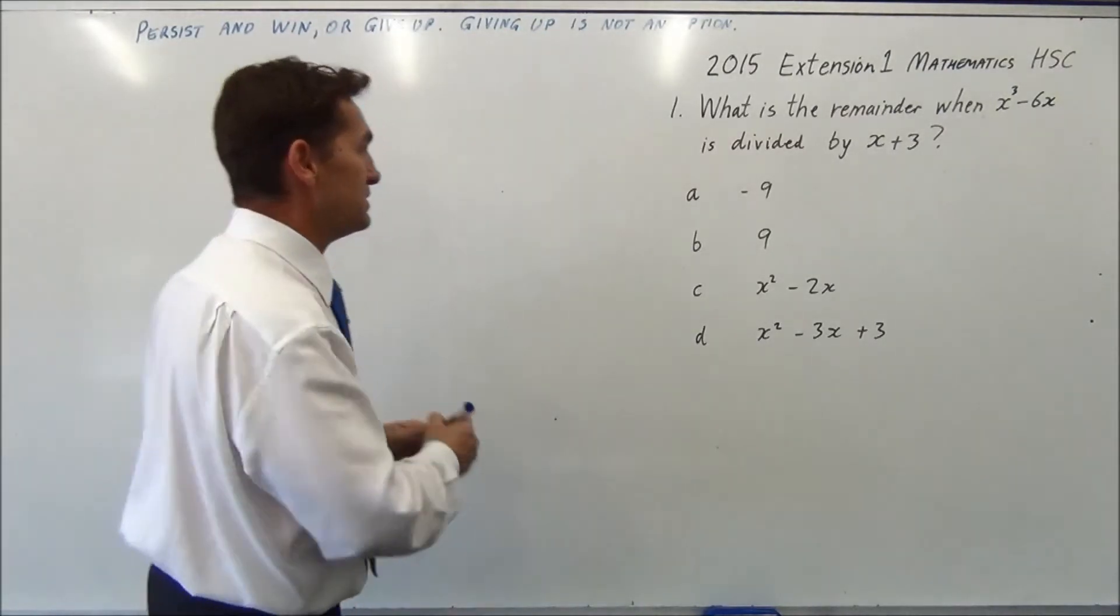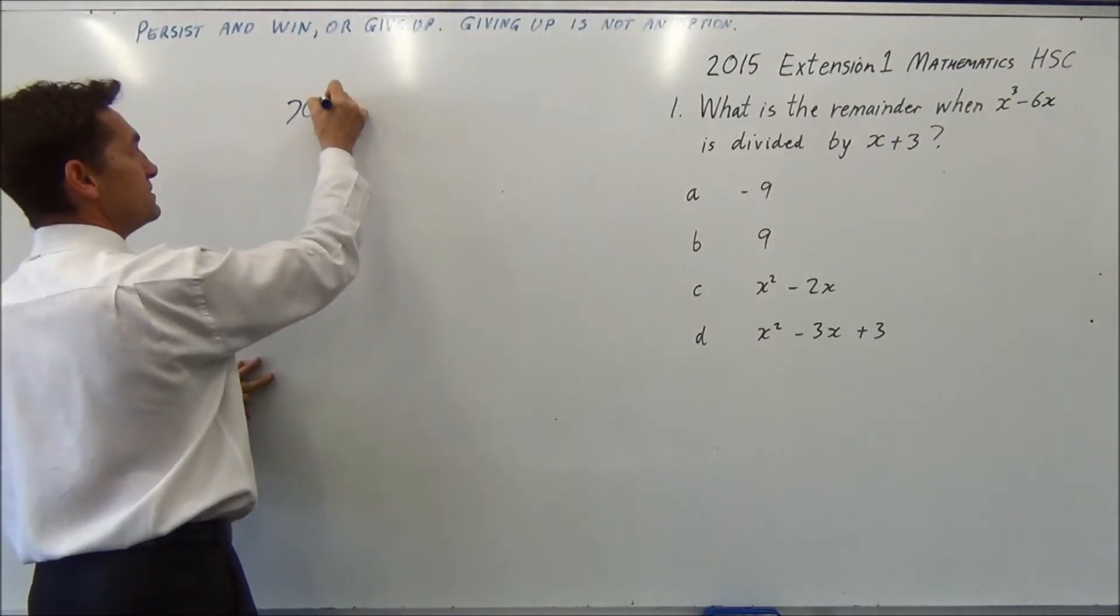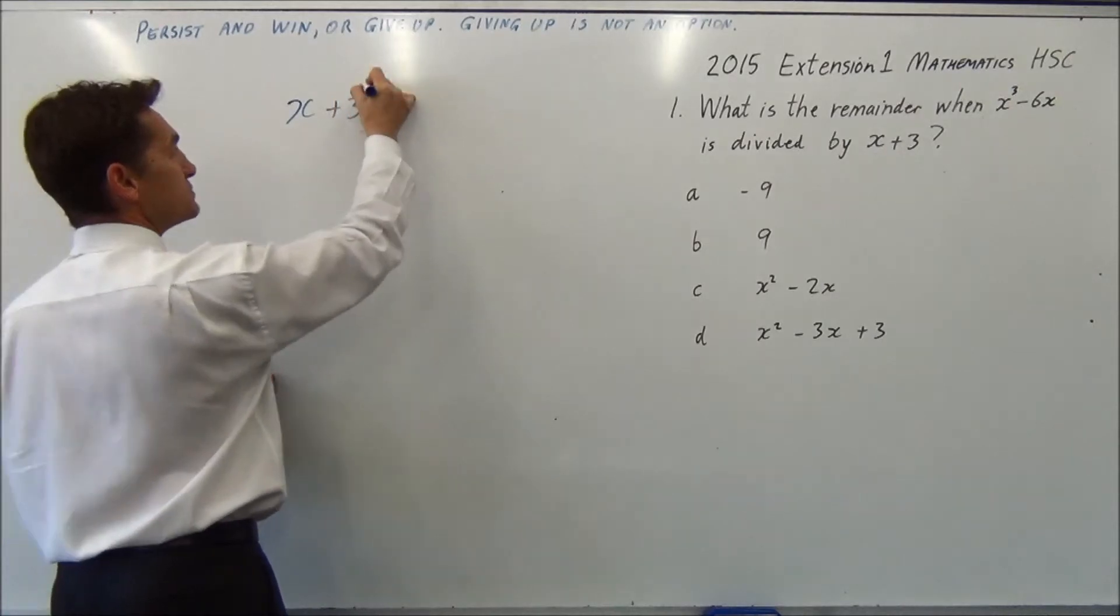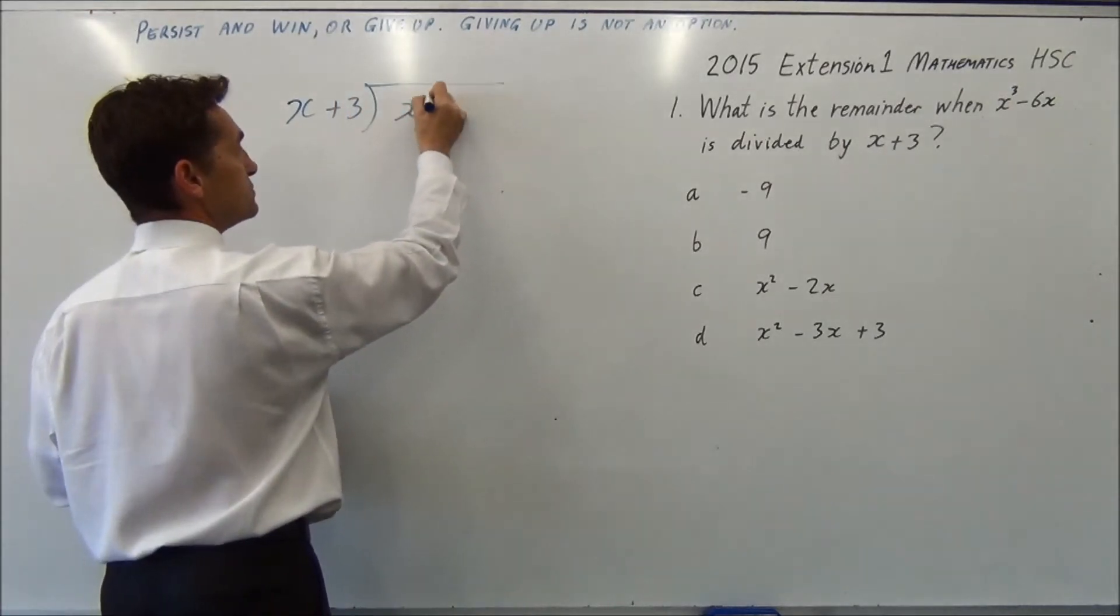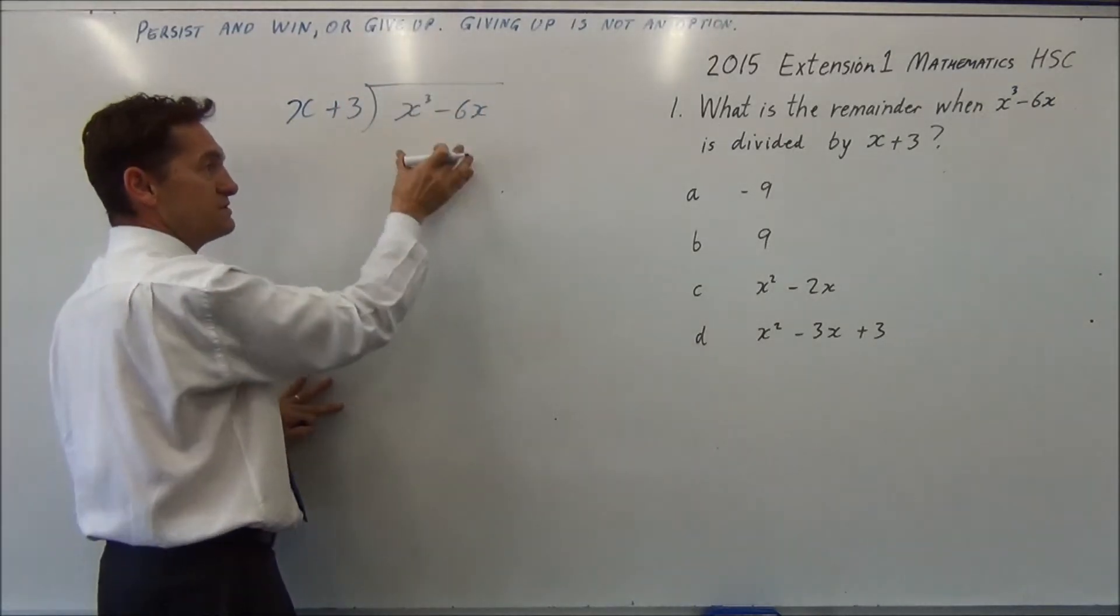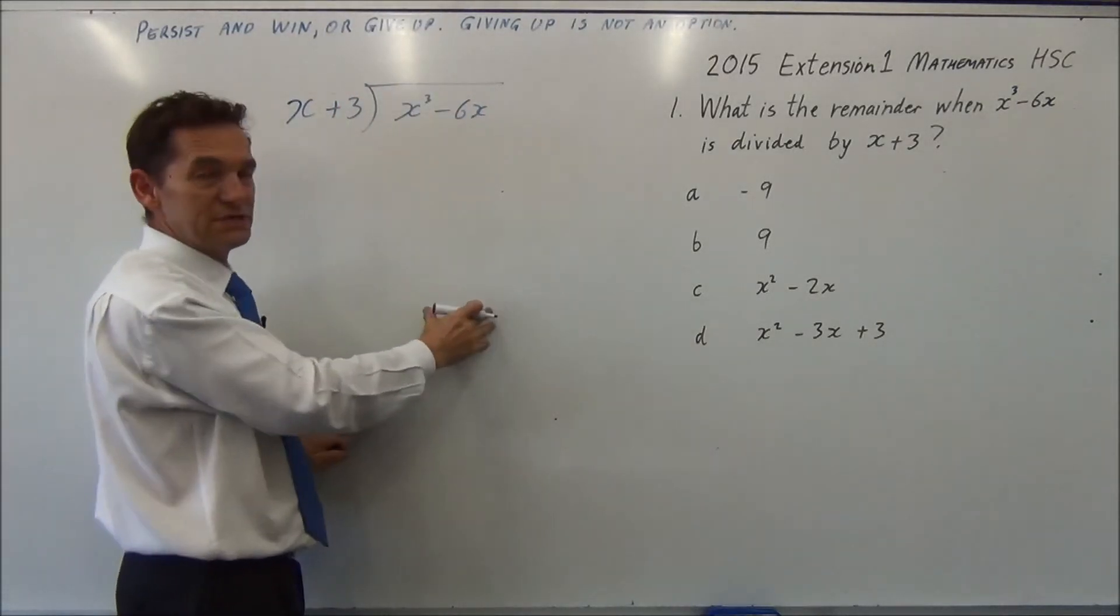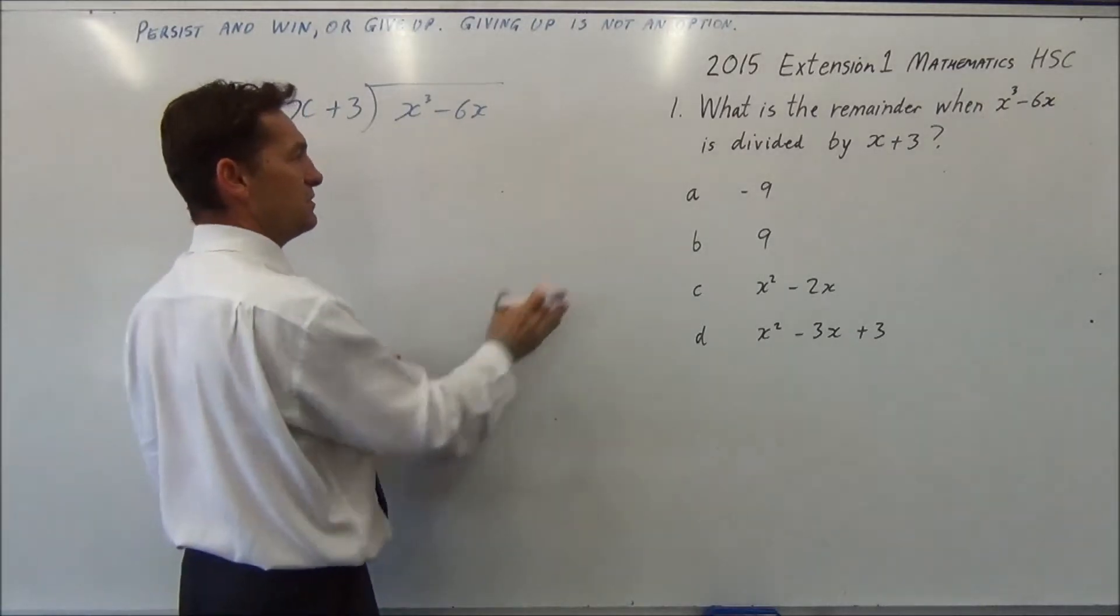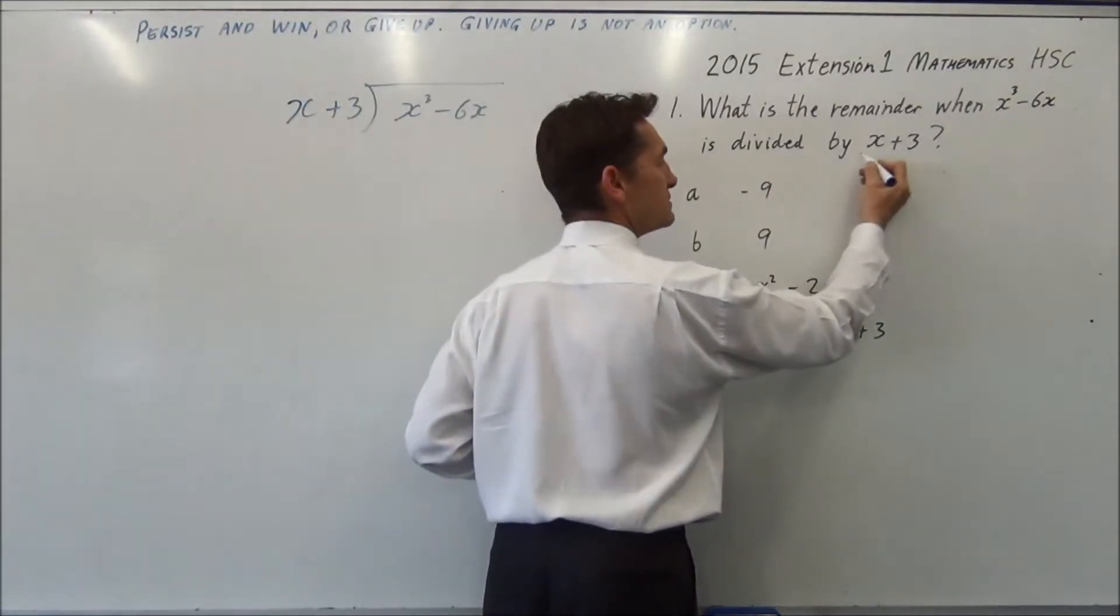So there's two ways to do it. One is to do a big division which will be x plus 3 into x cubed minus 6x multiplied by x squared, subtract all the way down. One easier way to do it would be to say if this is going into it,